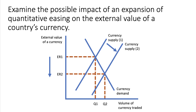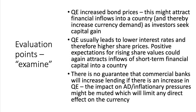Here's a diagram to show it. If there's an outflow of hot money — if overseas investors are selling the currency because of a fall in the yield on assets — then the currency supply might well shift out to the right, bringing down the equilibrium value of the exchange rate. Some evaluation points follow, because the word 'examine' requires you to evaluate.